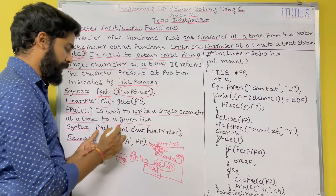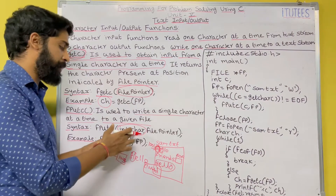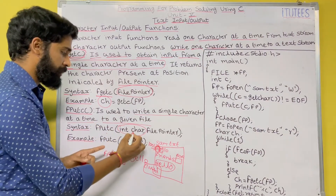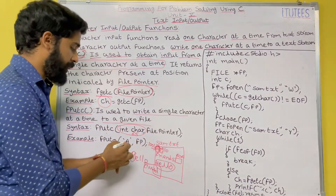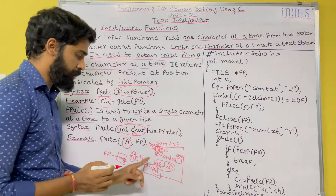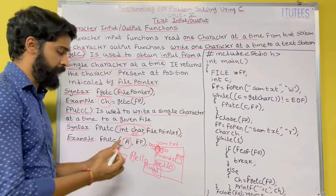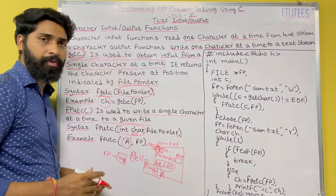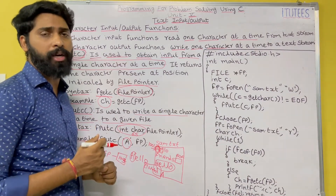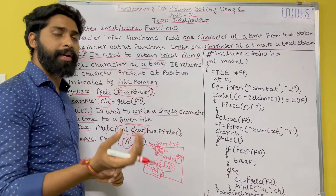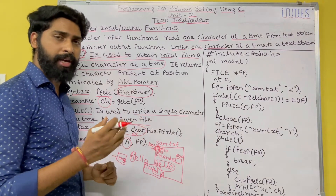Coming to the syntax: fputc(int c, FILE *fp). We read and write data with the help of ASCII numbers. For example, if you give 'A', its ASCII value is 65. int c holds the character value and fp is the file pointer. Example: fputc('A', fp) — the character 'A' is stored in the file. The purpose of fgetc and fputc is to read data character by character from a file and write data character by character to a file.